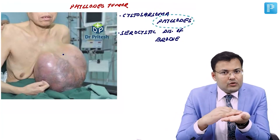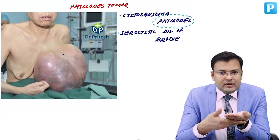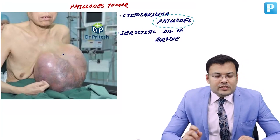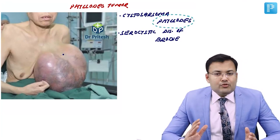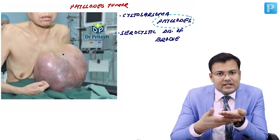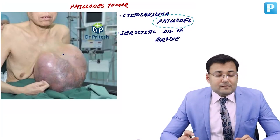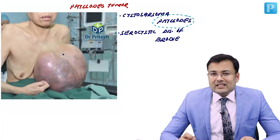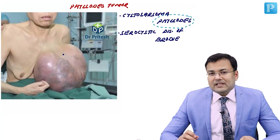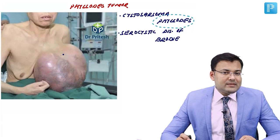Carcinomas have epithelial origin; sarcomas have mesenchymal origin. The unique thing about this tumor is that it has biphasic proliferation of both mammary epithelium as well as connective tissue or stroma. The most common route of spread in carcinoma breast (adenocarcinoma) is lymphatic, but this is a sarcoma, so here exclusively hematogenous spread is seen — lymphatic spread is not seen.